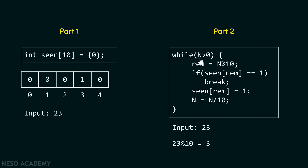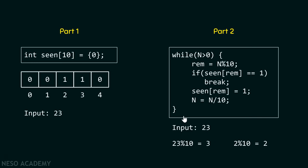The condition 2 > 0 is satisfied, so we divide 2 by 10, giving remainder 2. We check whether we have seen digit 2 before — we have not, so we replace that index value from 0 to 1. We then divide 2 by 10, giving quotient 0, stored in n. Since 0 is not greater than zero, we exit the while loop. When n equals zero, it means we have traversed all digits and found no repeated digit.